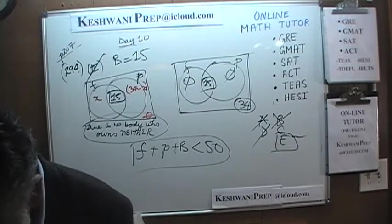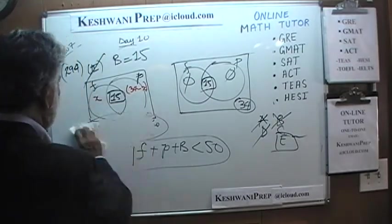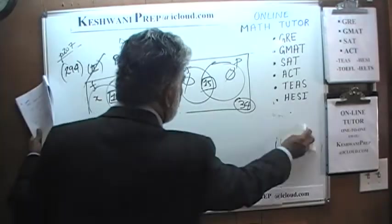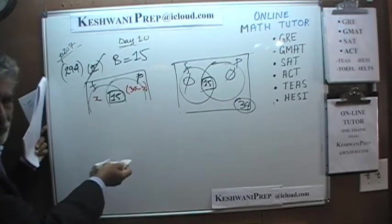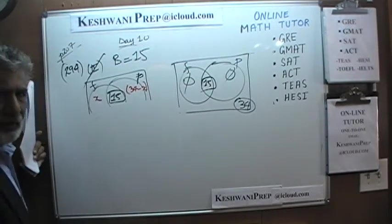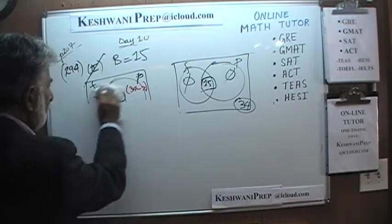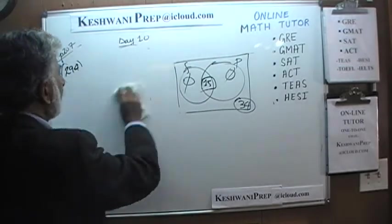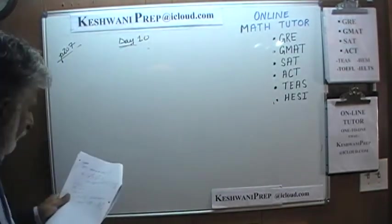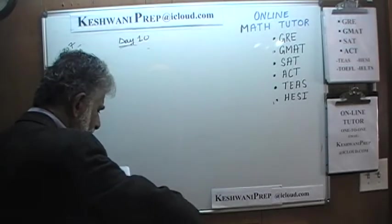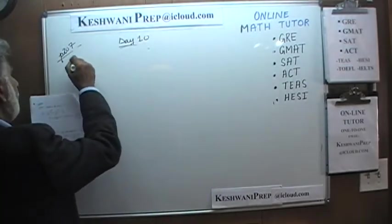There is one more problem left on this page. That was taking way too long — and remember, the Venn diagram work is not something you should do in the real exam; you just need to be able to see by looking at it that there is not sufficient data. The very last problem on page 207 is number 295.